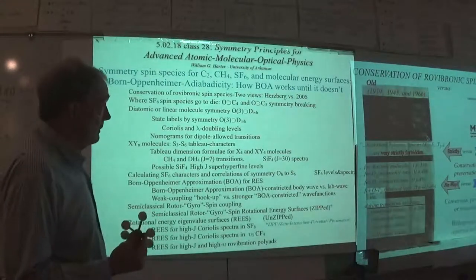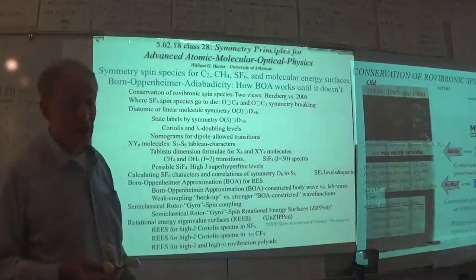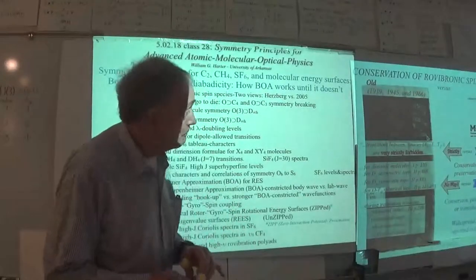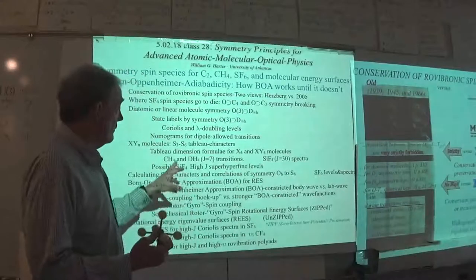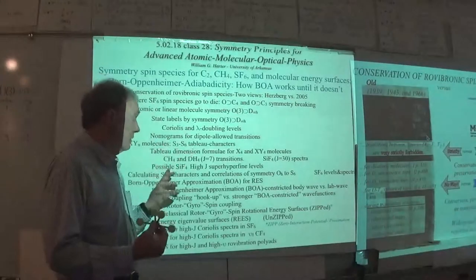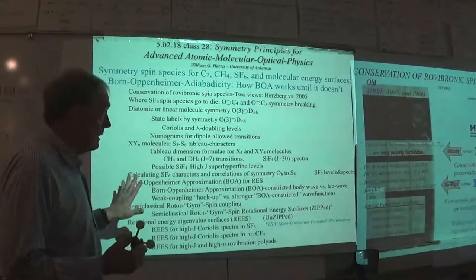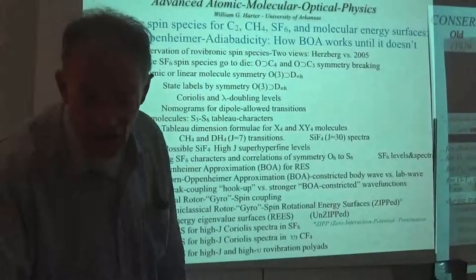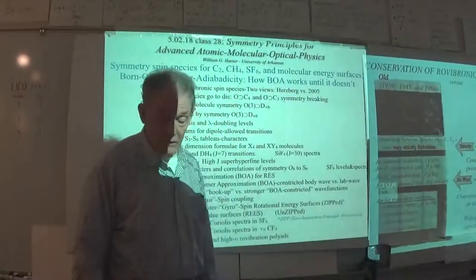Our first thing will be to go back to a linear or diatomic molecule and look at what the ro-vibronic spin species means — the old ortho and para characterizations with two-box tableaus, but with a little more physics. Then we'll take up the tetrahedral molecules SiF4, CH4, and DH4, looking at tableau character dimension calculations and how they show up in transitions and intensities. And then SF6 is the rest of the lecture, which has a lot of physics in it, some of which I had to remember as I put this lecture together.